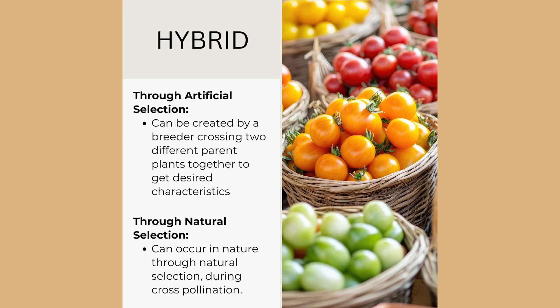A hybrid can be created by a breeder crossing two different parent plants together to get desired characteristics — this would be an example of artificial selection and the making of a cultivar, either in a laboratory or in an agricultural setting. A hybrid can also occur in nature through natural selection by cross-pollination and can lead to a new species.